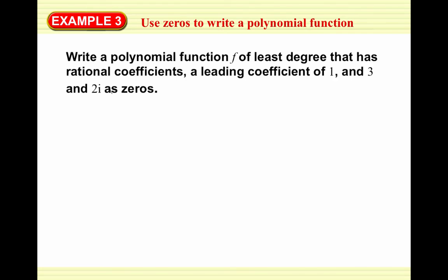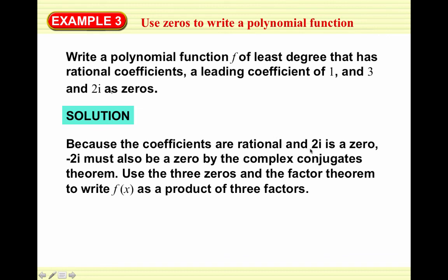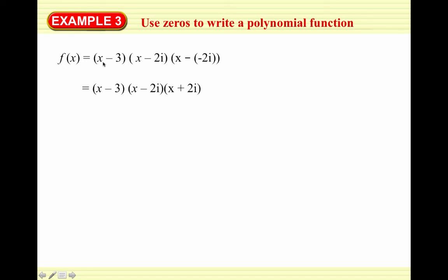We're going to use zeros to write a polynomial function of least degree with rational coefficients, a leading coefficient of 1, and zeros of 3 and 2i. Since 3 is just a plain integer it doesn't bring a buddy, but 2i is imaginary so it brings its conjugate. Since 2i is a zero, negative 2i must also be a zero. So we have three zeros: 3, 2i, and -2i.